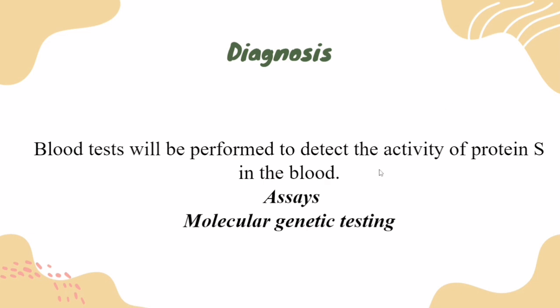Moving on to the diagnosis. A blood test will be performed to detect the activity of protein S in the blood. Assays are tests that evaluate the quantity and activity of certain enzymes in the blood. The amount of protein S in your body varies depending on a number of factors, including your age. Molecular genetic testing can also confirm a diagnosis of protein S deficiency in certain people.